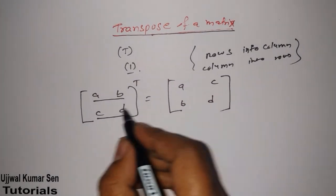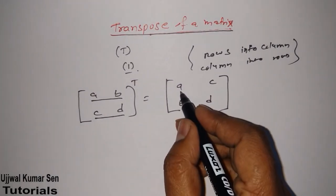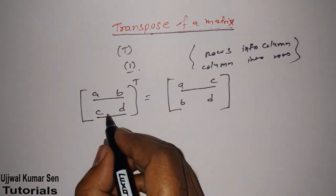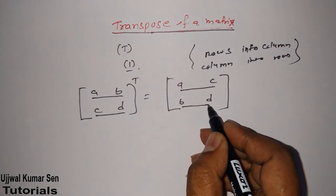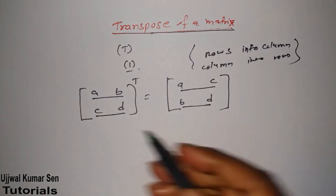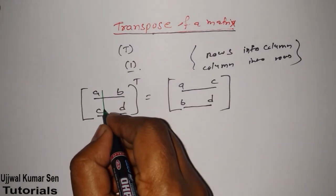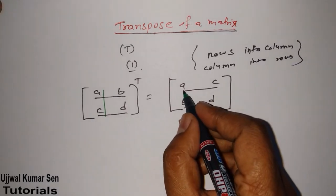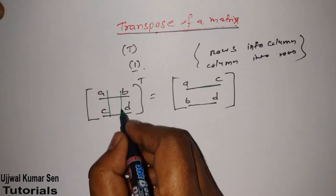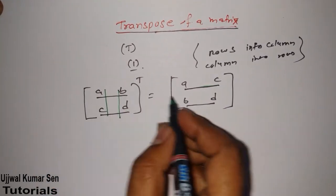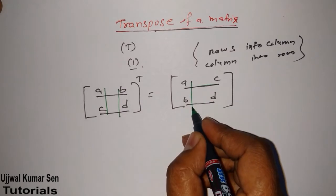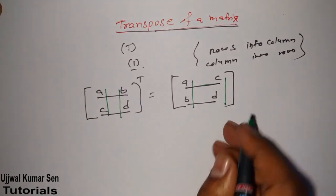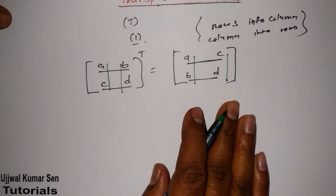If we do this then the columns will be converted into rows. B, D which were in a column have been converted into rows. The same case here: A, C were in a column but now they are in rows. B, D also. And A, B were in rows and now they are in a column. C, D were in rows and now they are in a column. So this is known as the transpose of a matrix.